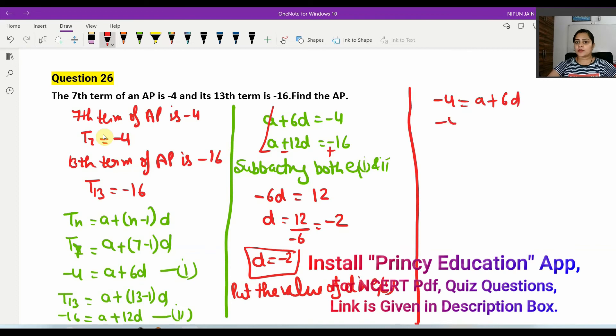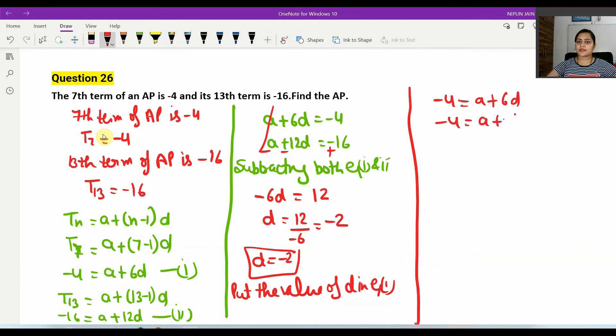The first equation is minus 4 equals a plus 6d. So minus 4 equals a plus 6 times minus 2. Minus 4 equals a minus 12. Therefore minus 4 plus 12 equals a, so a equals 8. Now we know the first term is 8 and the difference is minus 2.